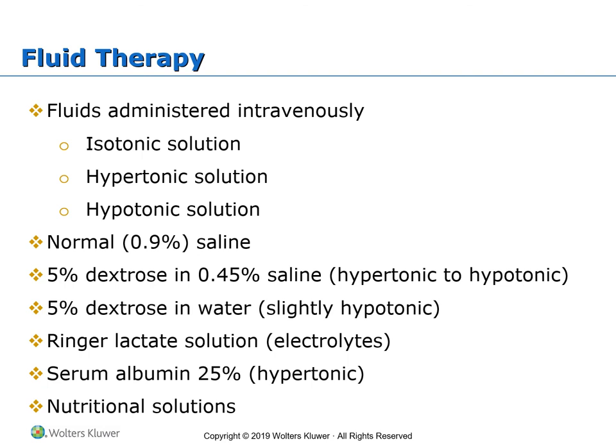The most commonly used IV solution is normal saline — 0.9% sodium chloride — similar to the concentration of solutes in our body, producing no fluid shift. Another type contains dextrose or glucose to provide nourishment, such as 5% dextrose in 0.45% saline. Initially hypertonic, once the body metabolizes the dextrose, only the 0.45% saline remains and the solution becomes hypotonic. The 5% dextrose in water is slightly hypotonic from the start, and once the dextrose is metabolized, only water remains.